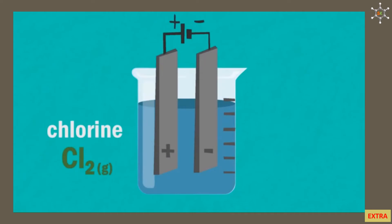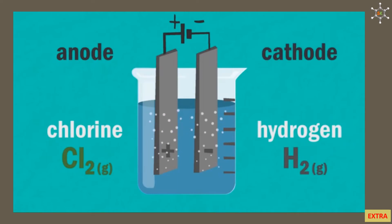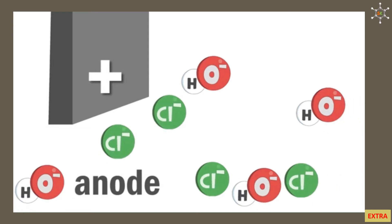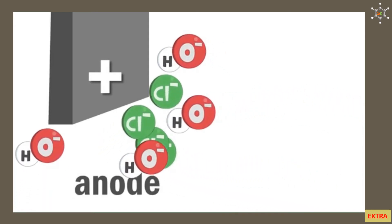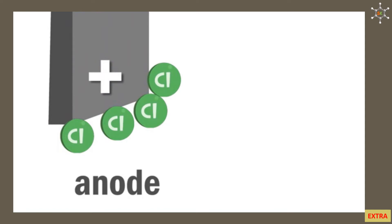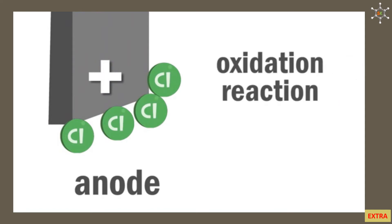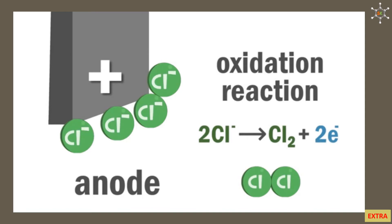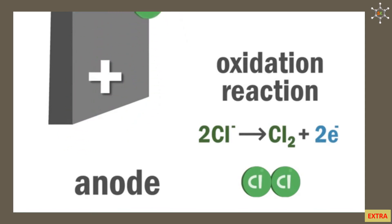Chlorine is formed at the anode (positive electrode) and hydrogen is formed at the cathode (negative electrode). At the anode, the negative chloride ions give up their electrons and are oxidized to chlorine molecules — two chloride ions are oxidized to form one diatomic Cl2 molecule, releasing two electrons to the anode.